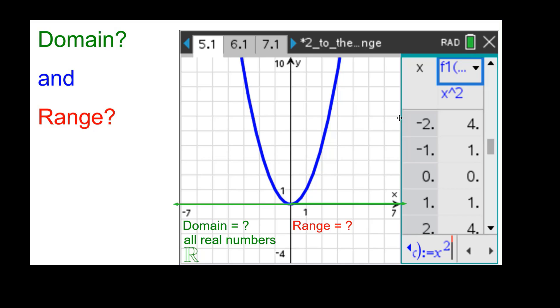The range, well, you'll notice in here, doesn't look like we have any negative numbers. So it's going to include 0 because of the vertex and then everything above it. So it's going to be all real numbers greater than or equal to 0. We write that in set notation as the set of all y such that y is a member of the real numbers and y is greater than or equal to 0.